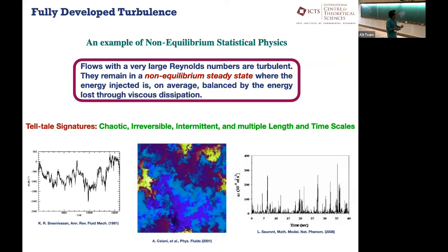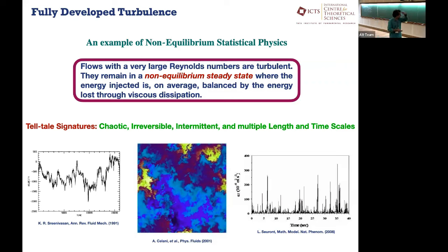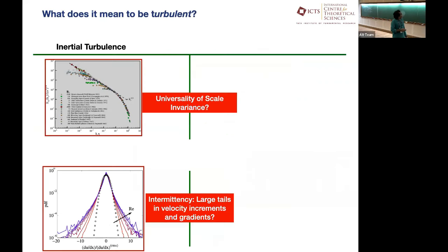For example, from Antonio's work on passive scalar — think about dye in a turbulent flow — you end up having strong boundaries between where things are concentrated a lot and where they are not. This gives rise to well-known effects in turbulence.